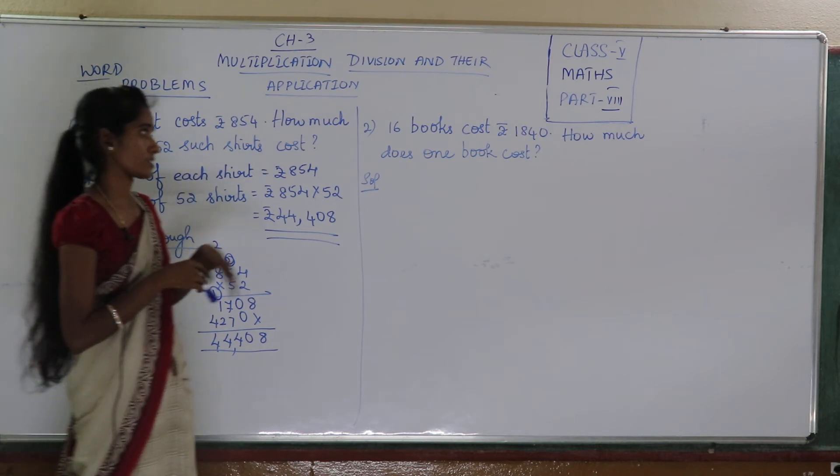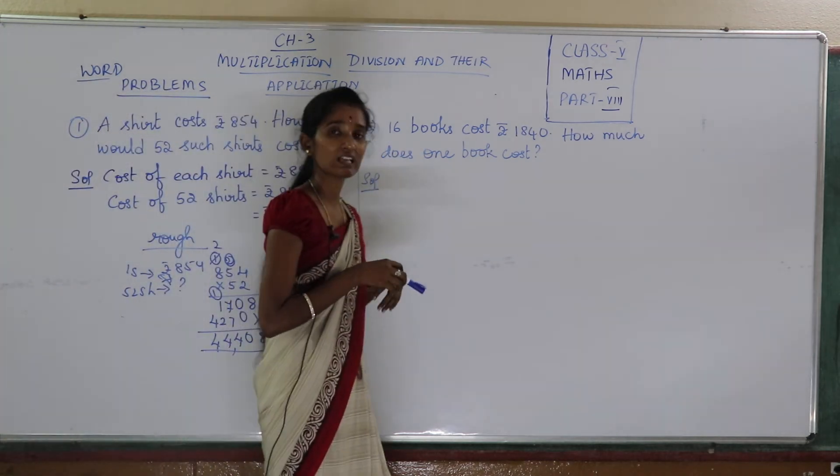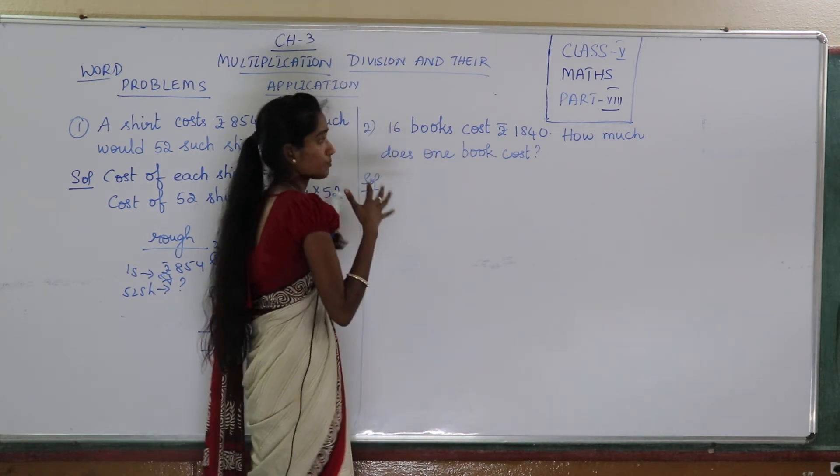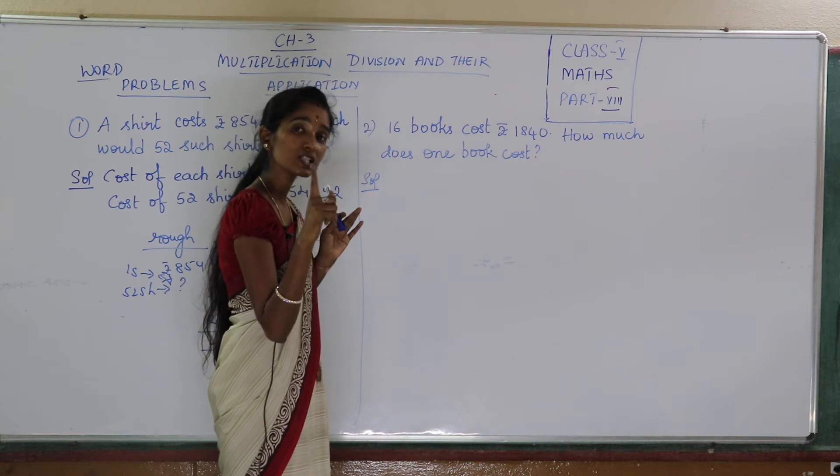Now check my next question. 16 books cost 1840 rupees. How much does one book cost? So he gave me the many but I have to find out the single.